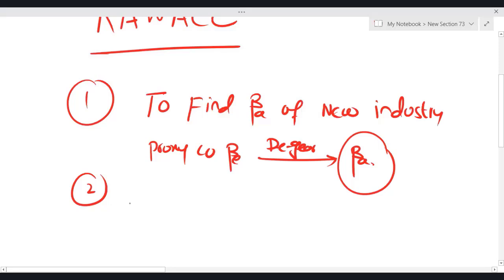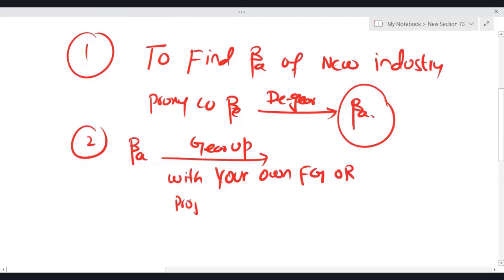Once you have found beta asset of the new industry, we take this beta asset, gear up, gear up with your own financial gearing or project specific financial gearing if it is given to you. So by gearing a beta asset, you will get beta equity.